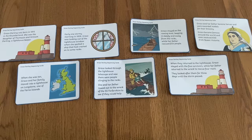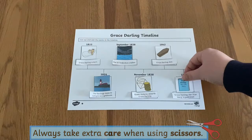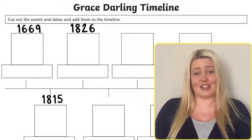Extend learning by giving children this Grace Darling timeline activity, where they can learn how a timeline is structured by placing the events of Grace Darling's life in order. This activity is differentiated, so there's a version with the dates already included and one where children can add the dates in the correct place themselves. There's even a handy answer sheet to make assessment easy.